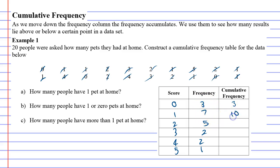Then 3 plus 7 plus 5 is 15. 3 plus 7 plus 5 plus 2 is 17. Then 19 and 20. Notice that our cumulative frequency finishes on 20, which is the total number of people.